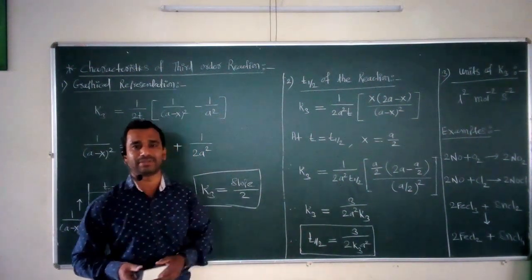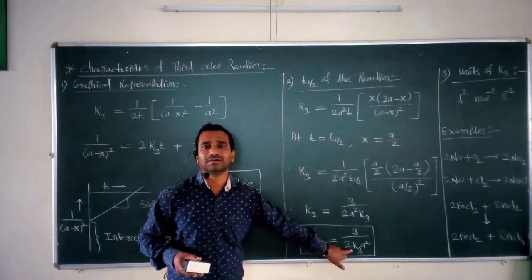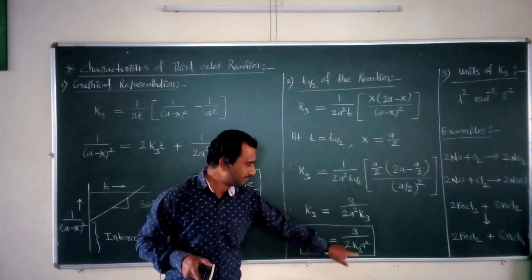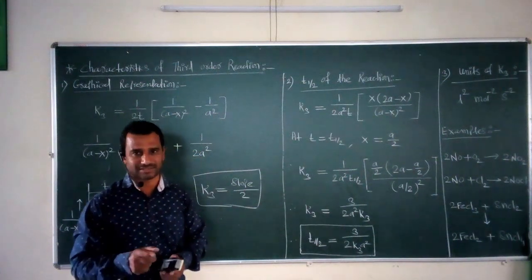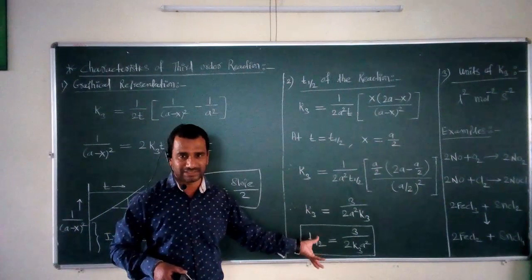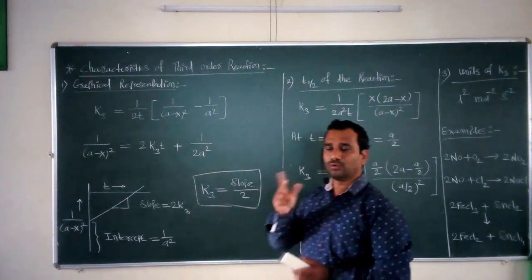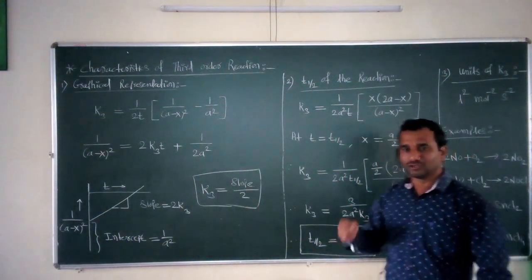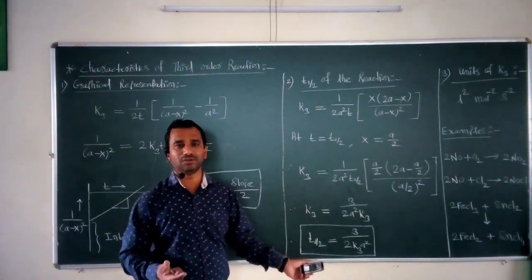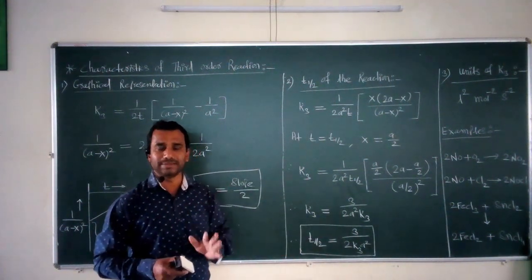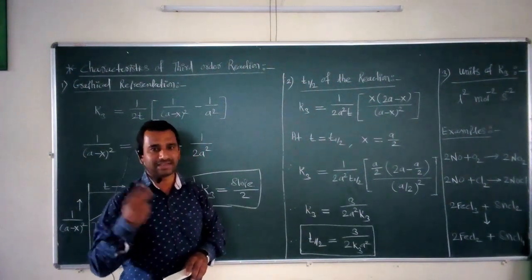To calculate the half-life period of a particular chemical reaction, you require two important parameters: you must know the rate constant for a third order reaction as well as the initial concentration of the reactant. On the other hand, if you know the half-life period of a particular chemical reaction, you may calculate the rate constant for a third order reaction. These are the two important applications of the half-life period equation.